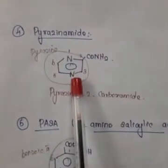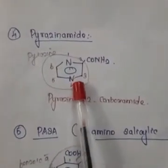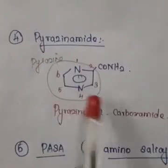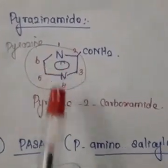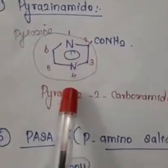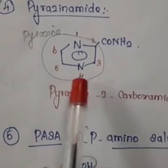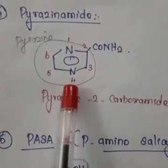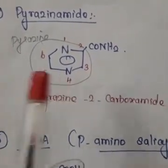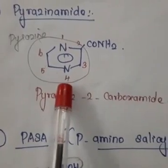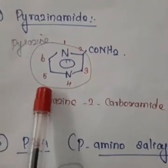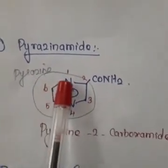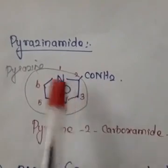The next drug is pyrazinamide. Pyrazine is a six-membered ring with two nitrogens at positions one and four. It has an isomer called pyrimidine, which is also a six-membered ring with two nitrogen atoms, but the nitrogens are at positions one and three.